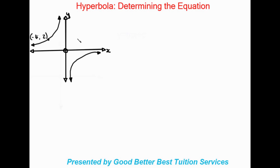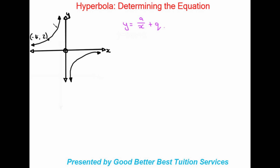Good day and thank you for joining us. In our last lesson we did our introduction to hyperbola and how to plot it. We found that the standard form for a hyperbola was y is equal to a over x plus q, where q is our vertical shift or asymptote. Remember the first quadrant is always paired with the fourth quadrant, and the second quadrant is always paired with the third quadrant.